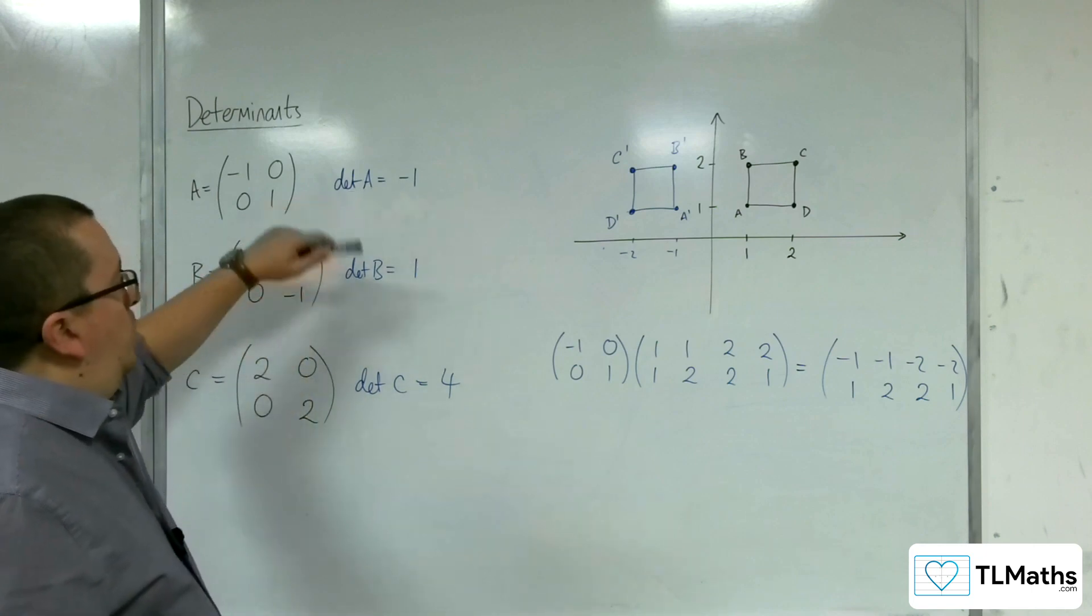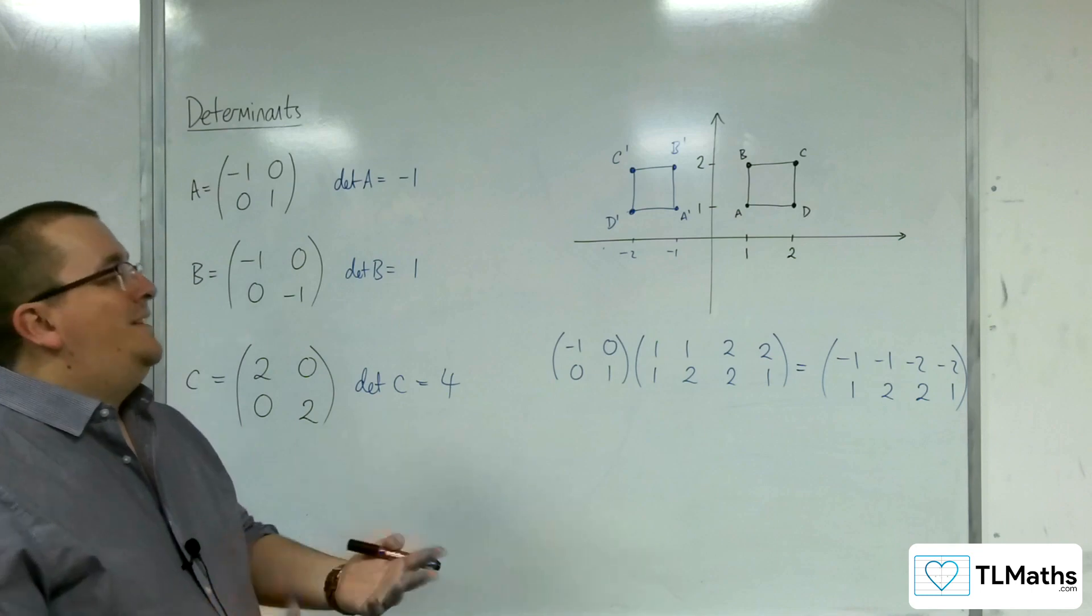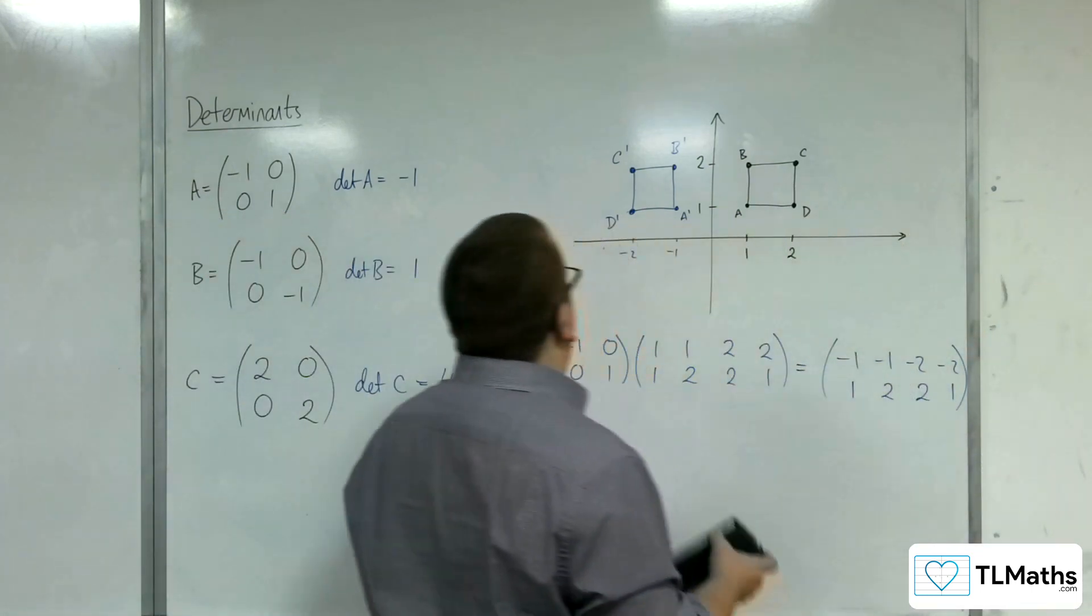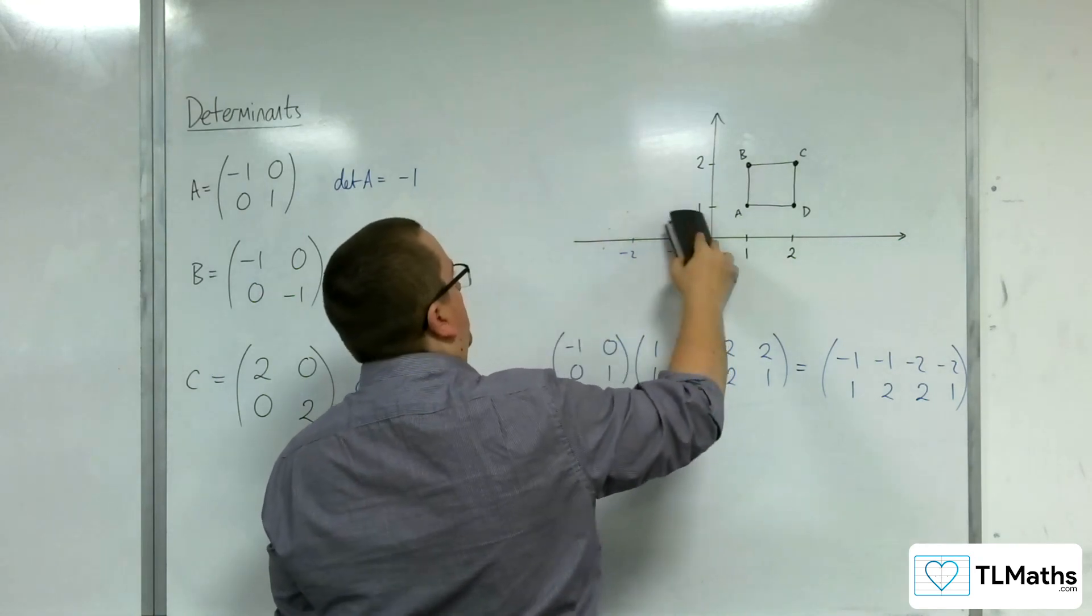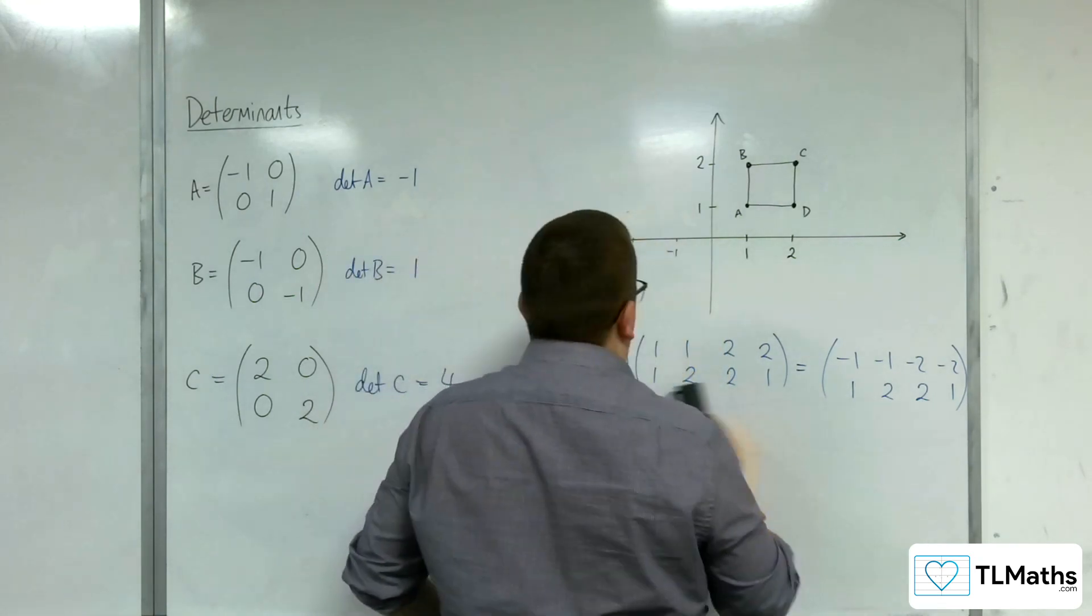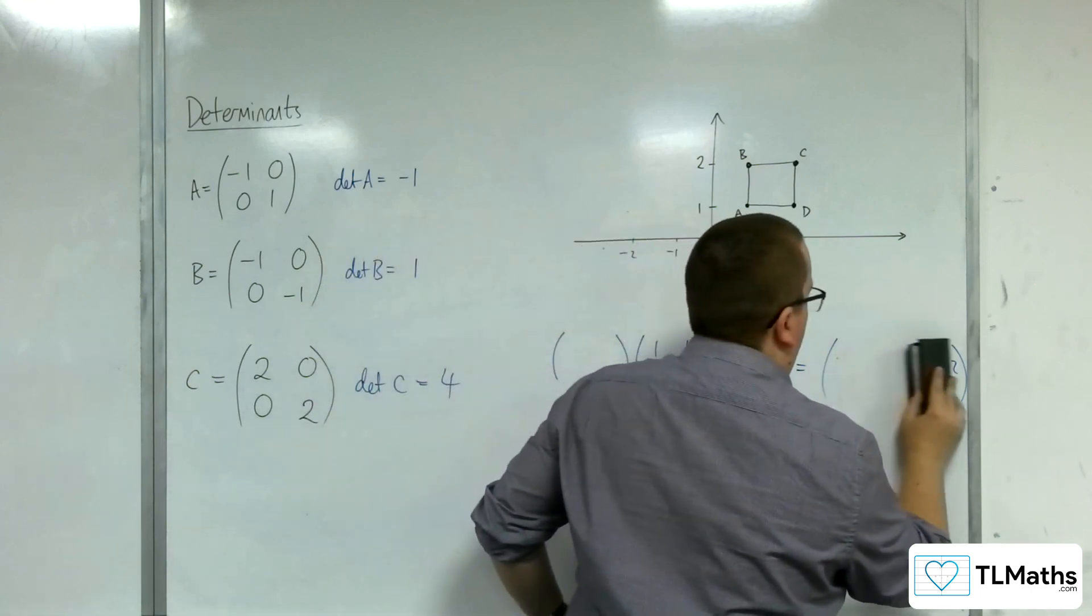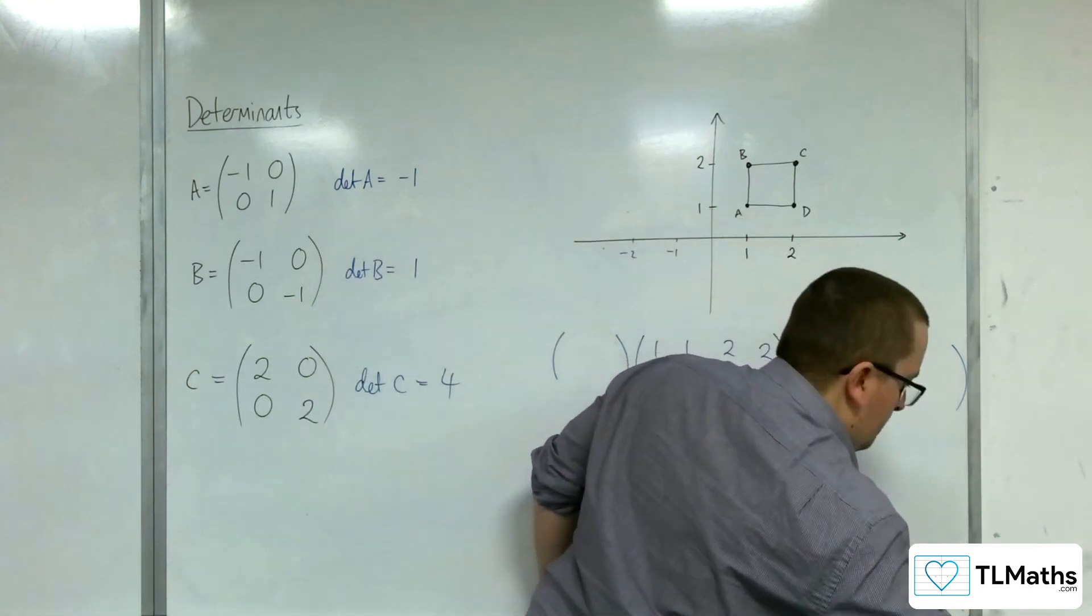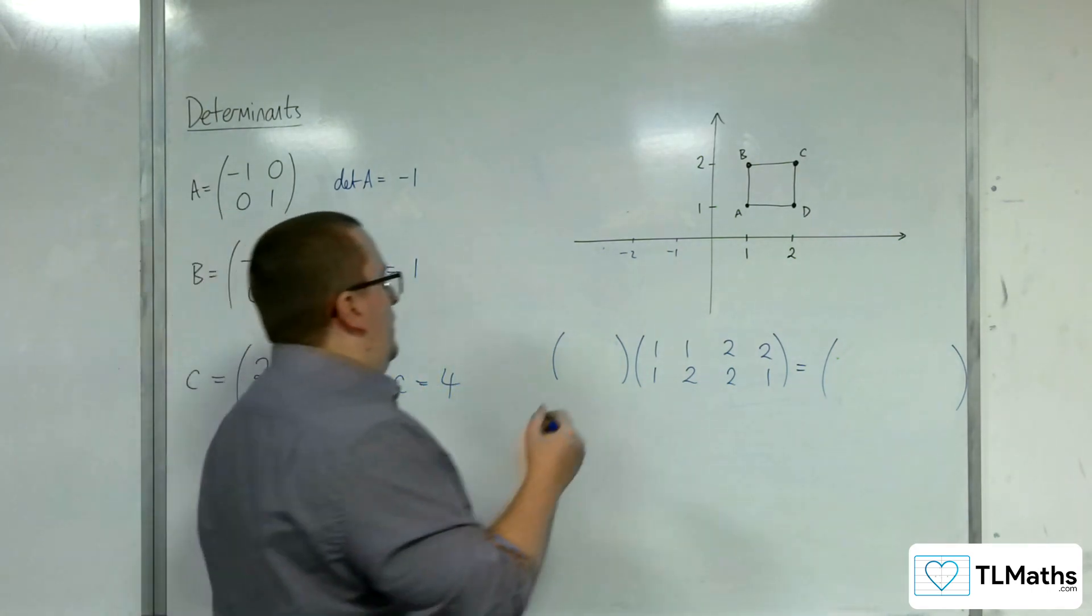Now, it's important then to have a look at these two situations just to see that actually the orientation is maintained. So we've now got matrix (-1, 0; 0, -1).